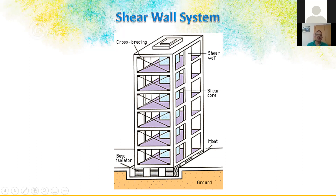Base isolation is recommended as buildings get taller, because designing for the full seismic forces becomes impractical. In high seismic zones, going very high-rise is inadvisable due to cost and safety issues. Burj Khalifa is the world's tallest because Dubai does not fall under high wind or high earthquake zones. Even in Japan, buildings go up to 50-60 floors but not much higher because it is not viable.